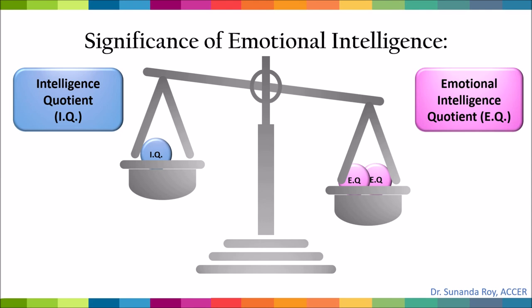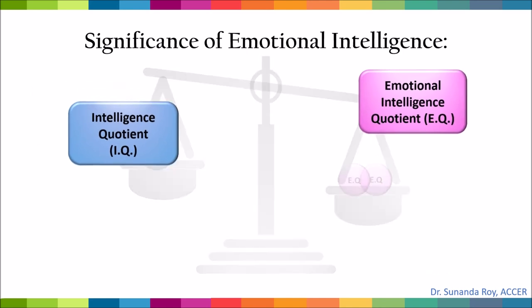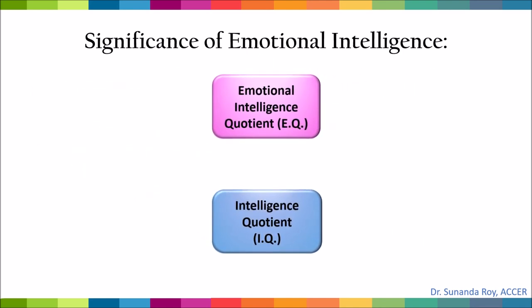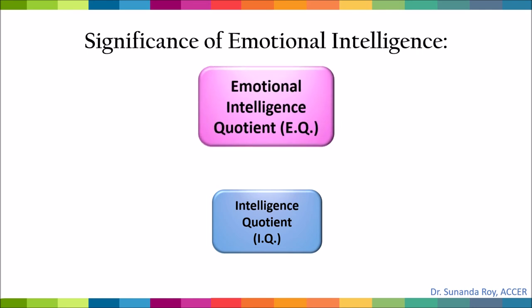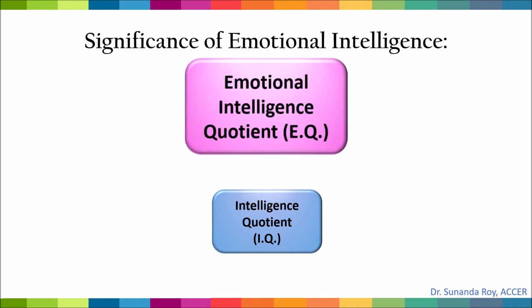Another big significance of emotional intelligence is that it can be learnt and developed, whereas IQ is an inborn ability. So as we can see, the scale tilts towards EQ. The objective of EQ is not merely scholastic achievement but training the child for life. IQ may ensure success in school; however, EQ or emotional intelligence can help in becoming successful in life.